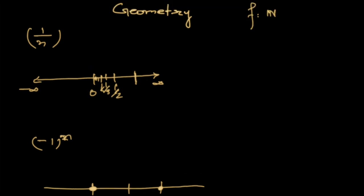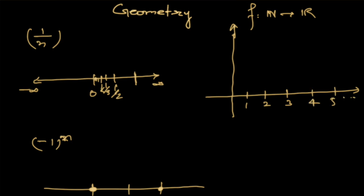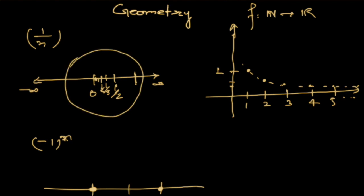Since f is a function from ℕ to ℝ, there is another way to visualize the sequence: the same way we visualize a function. We plot n along one dimension — 1, 2, 3, 4, 5, and so on — and the real number values along another direction as the image. For 1/n: at n=1 the value is 1, at n=2 it is 1/2, at n=3 it is 1/3, then 1/4, 1/5, and you can see the sequence decreasing toward 0. The range of this function on the real line corresponds to what we plotted earlier.